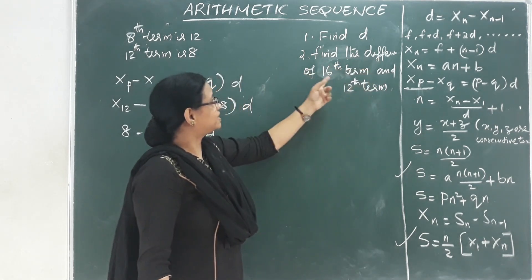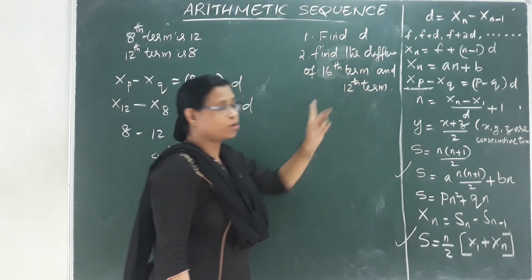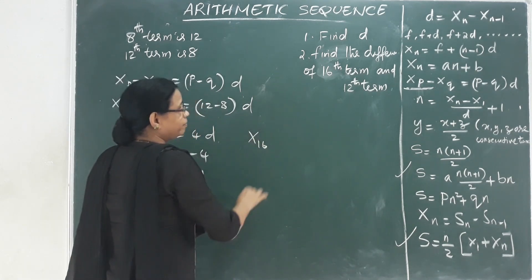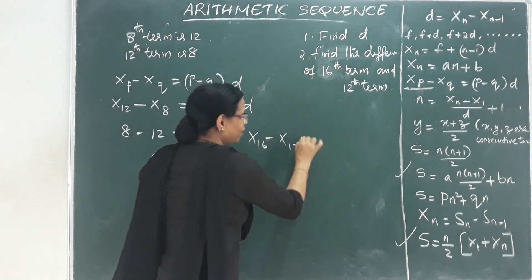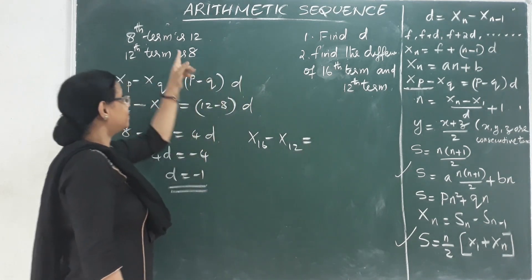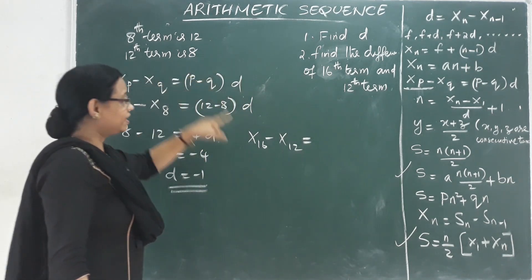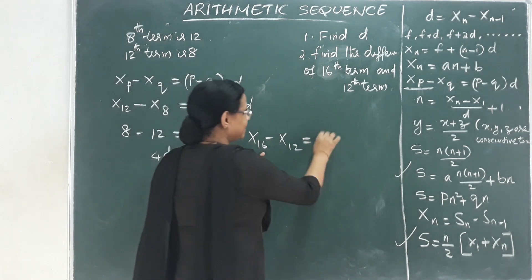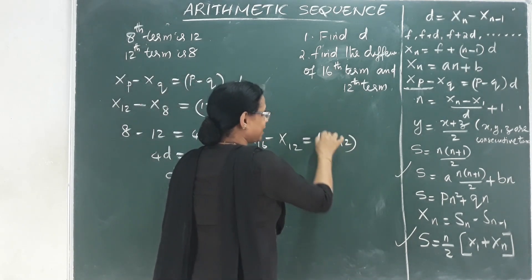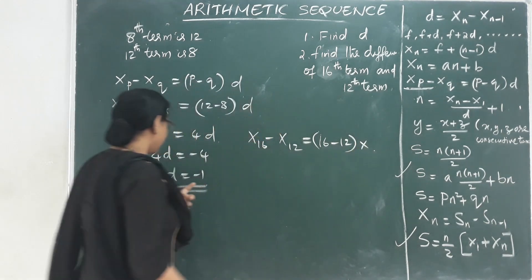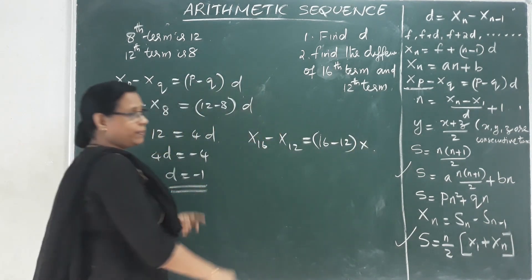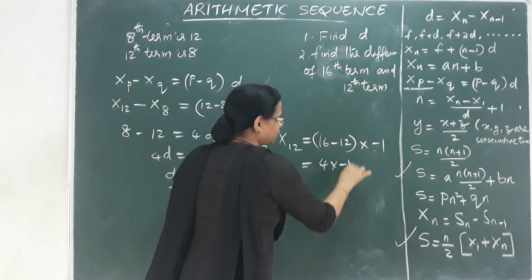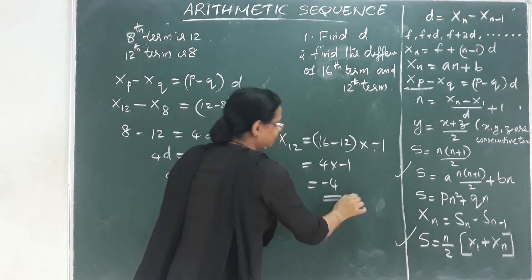Now find the difference of the 16th term and the 12th term: x16 minus x12. We subtract 12 from 16, which gives 4, then multiply by the common difference d equals minus 1. The answer is 4 into negative 1, which equals negative 4.